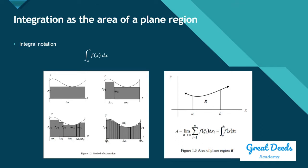We are not yet done with the introduction. So, integration as the area of a plane region — this is our notation for getting the integral of a function. It is the integral of f of x dx from a to b. You call a the lower limit of integration, and b the upper limit of integration, or you can call it the interval where you are integrating your function.